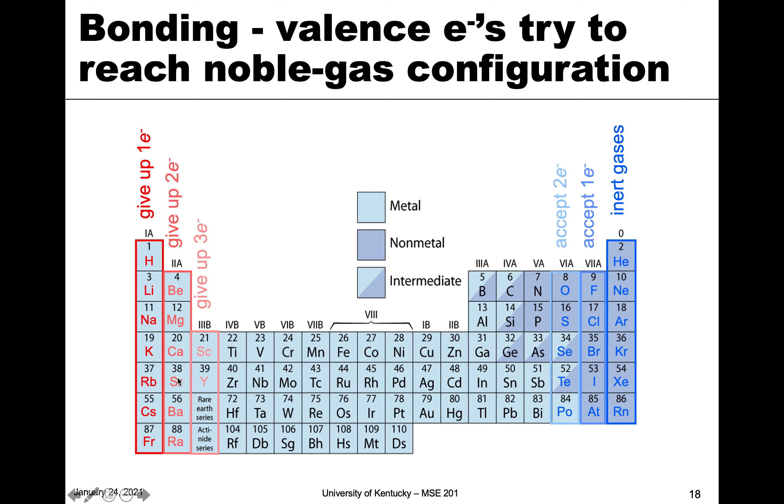And the same thing if you're one over. Beryllium, magnesium, calcium want to give up two. And then scandium, yttrium, and all of these rare earth elements want to give up three. And in the middle here are transition metals, and they have varying states.